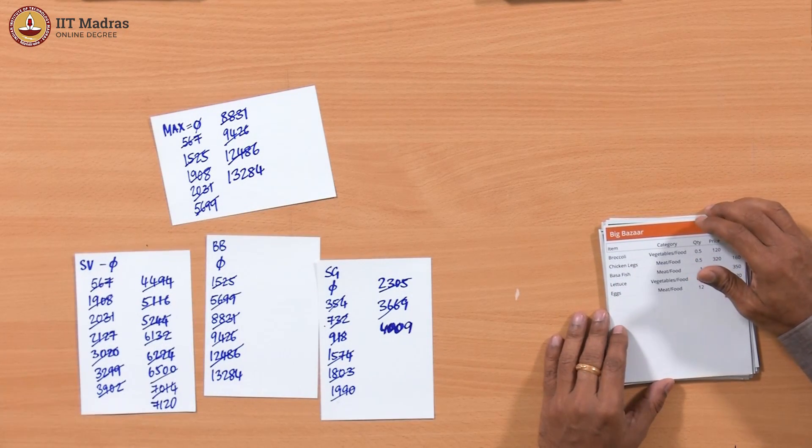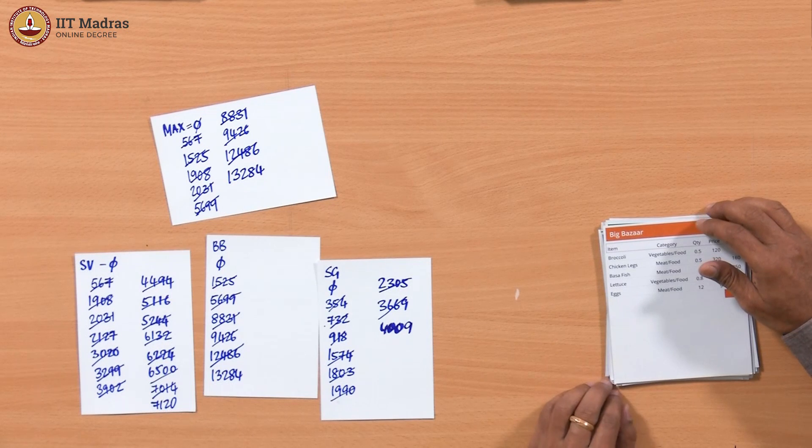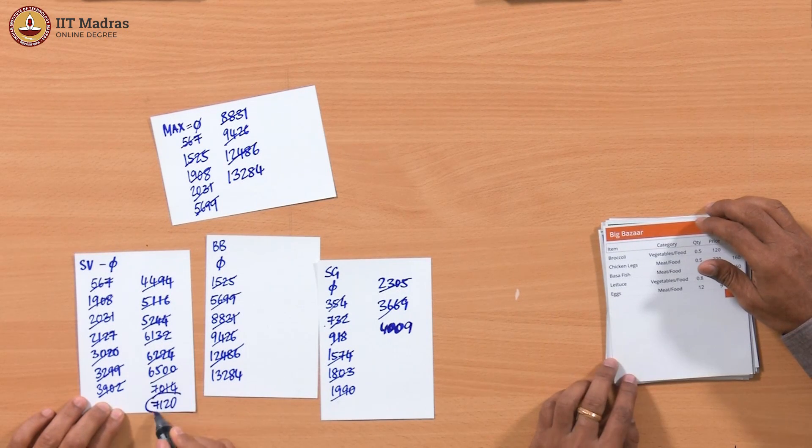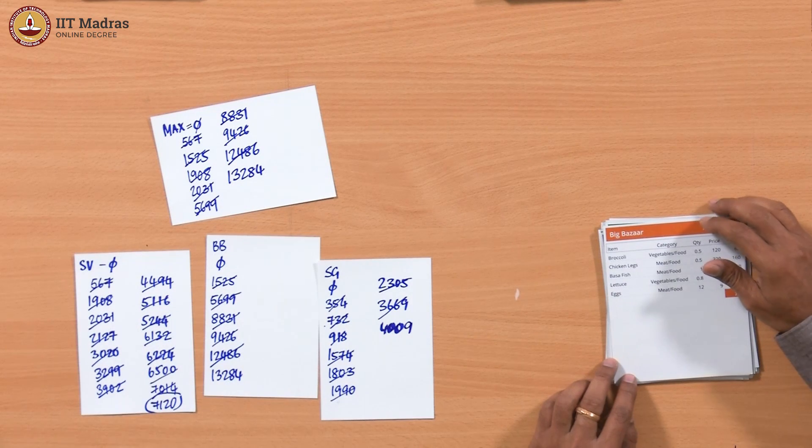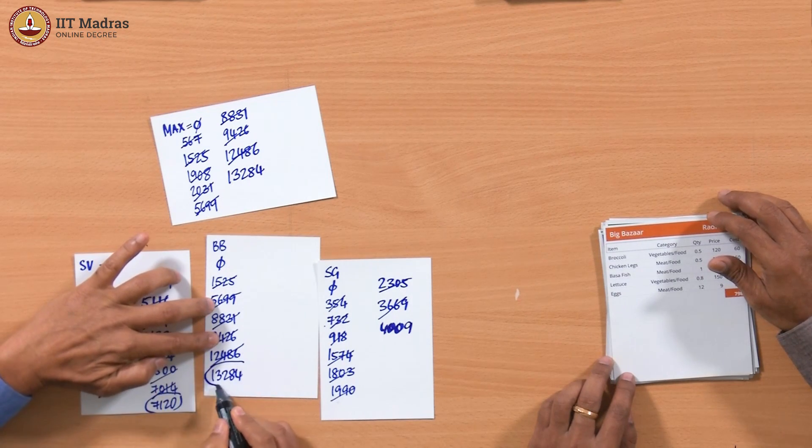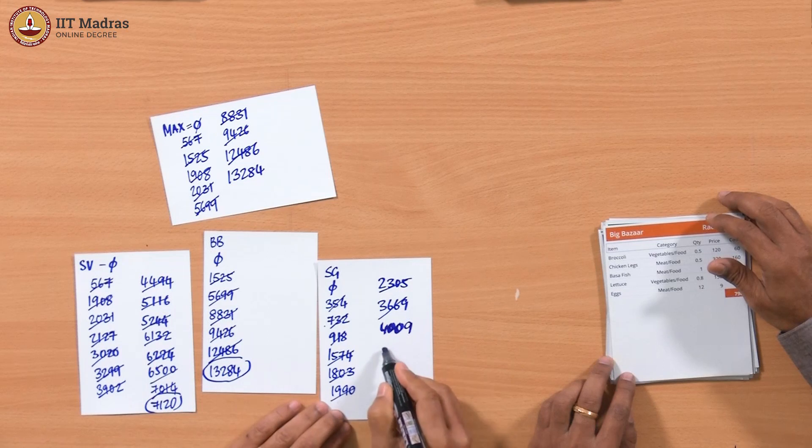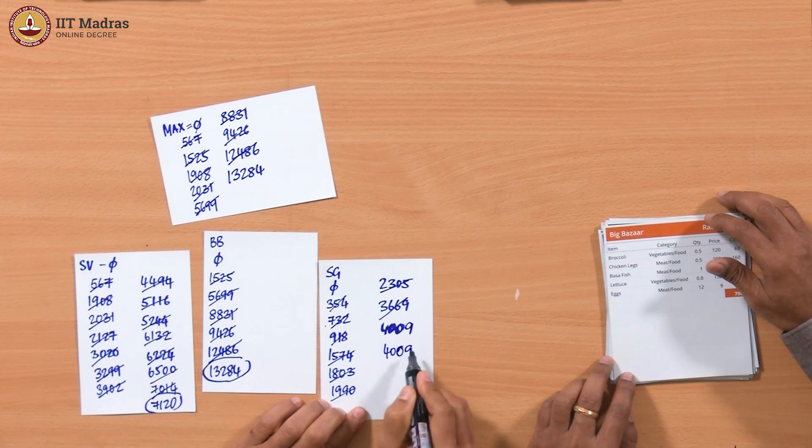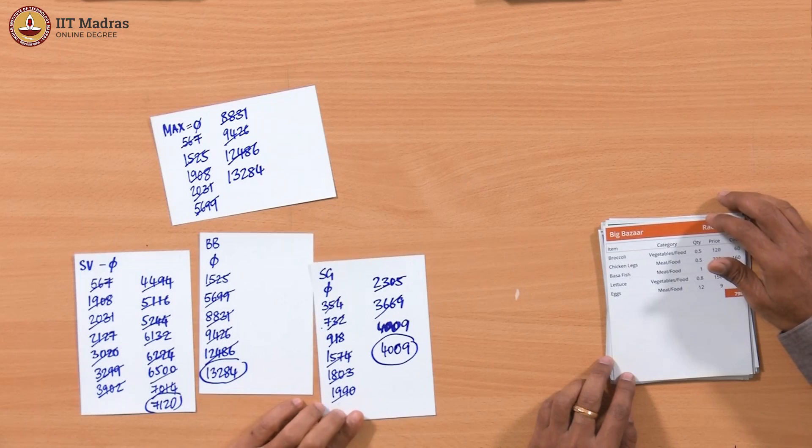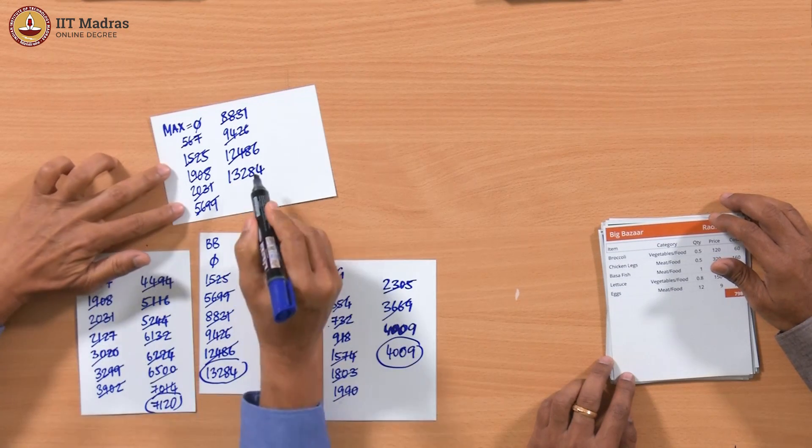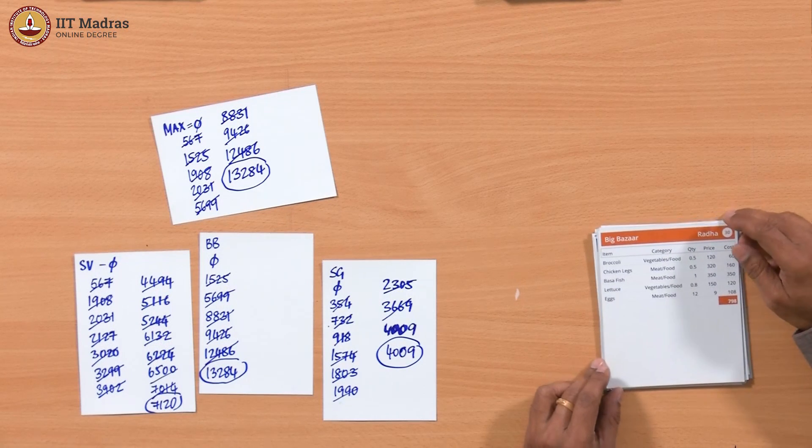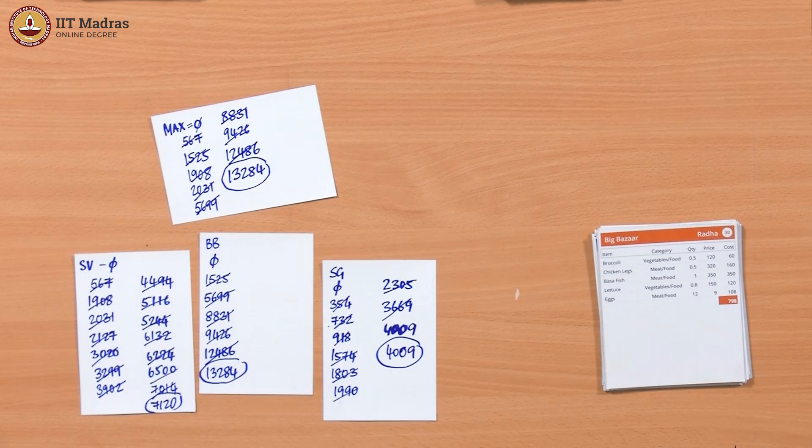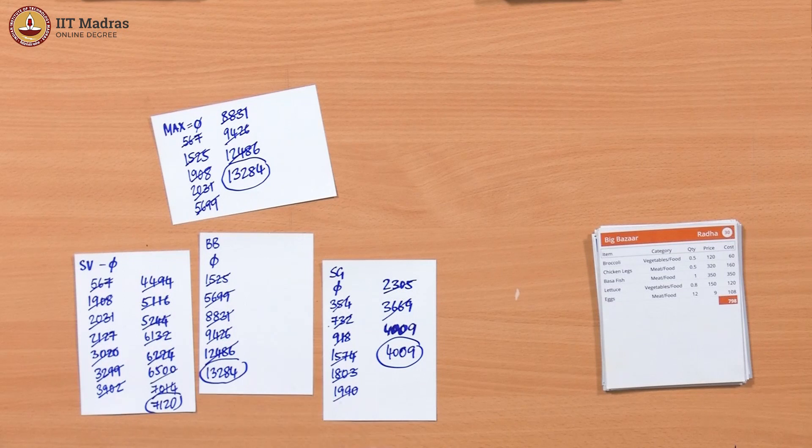So we have got a number of things here. We got the totals for SV which is now 7120, that is all the bills added up across the amounts. This is the total of Big Bazaar 13284, which also happens to be the max. Then here we have 4009 as the total for Sun General.